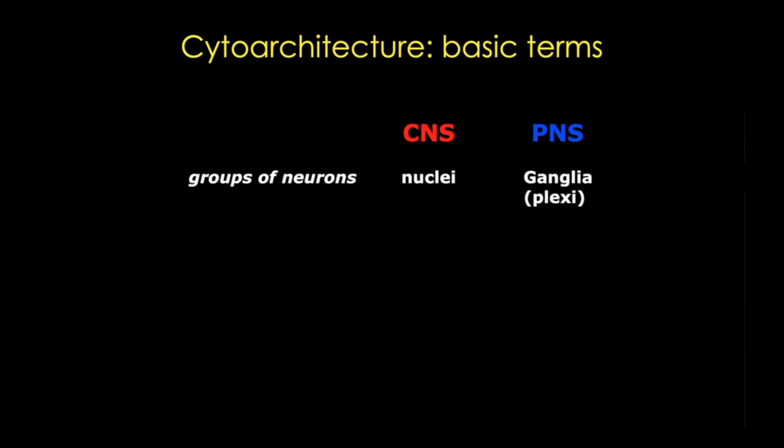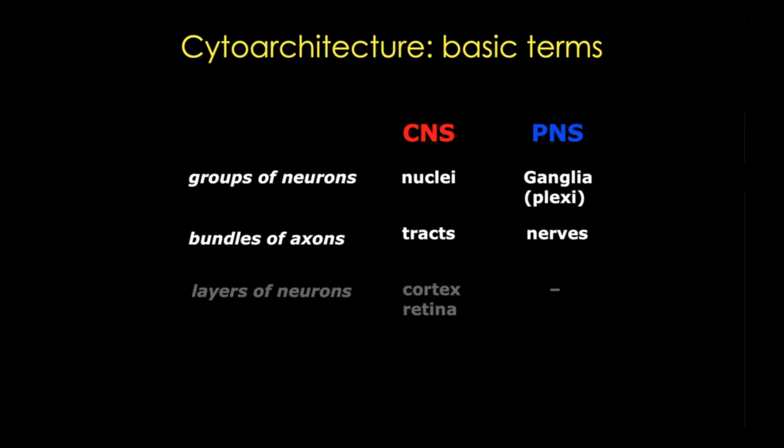Bundles of axons are called tracts in the CNS and nerves in the PNS. The CNS also has regions that have specific layers of neurons, principally in the cortex and the retina.